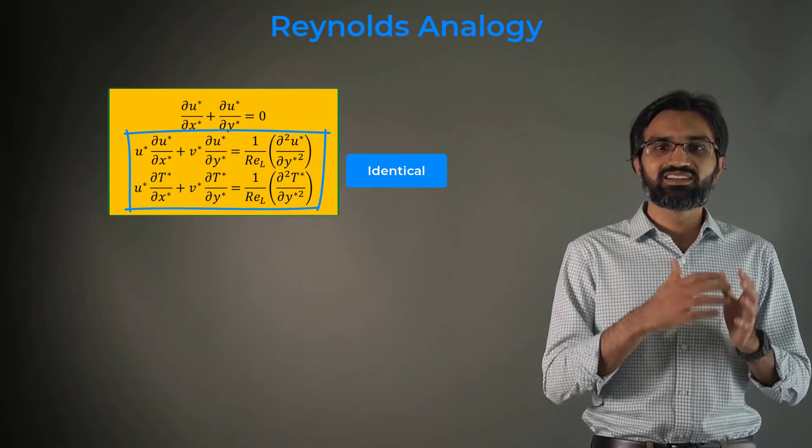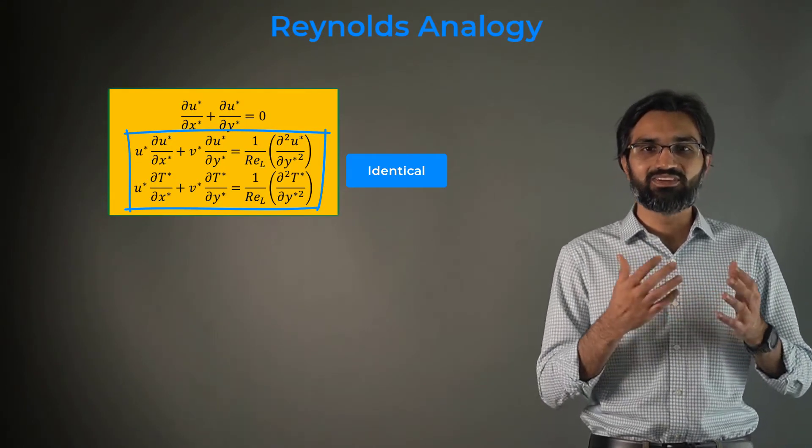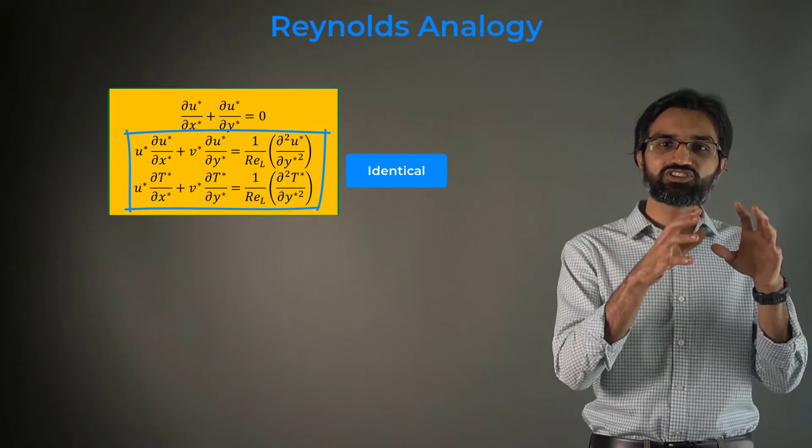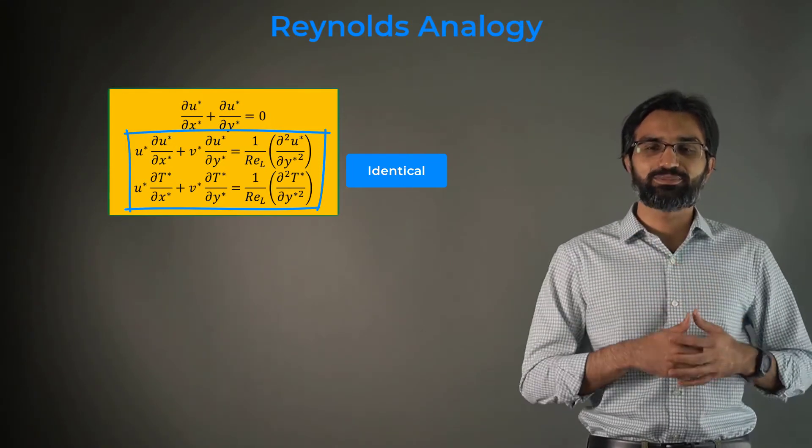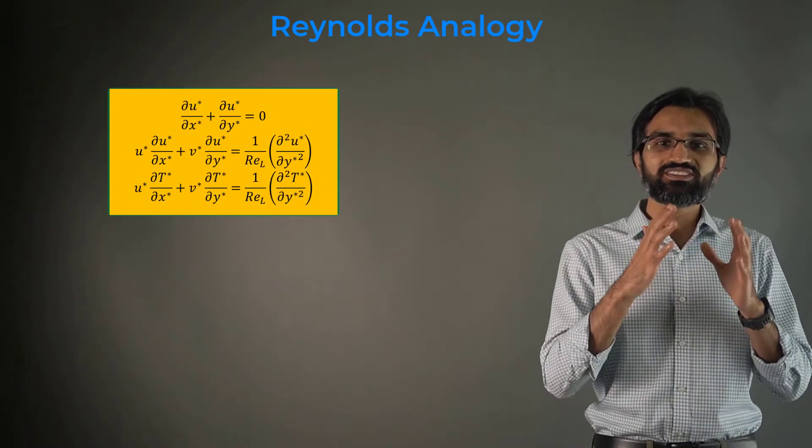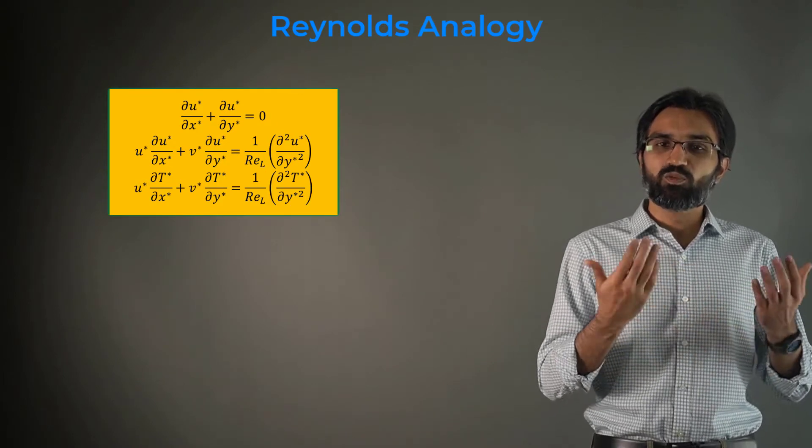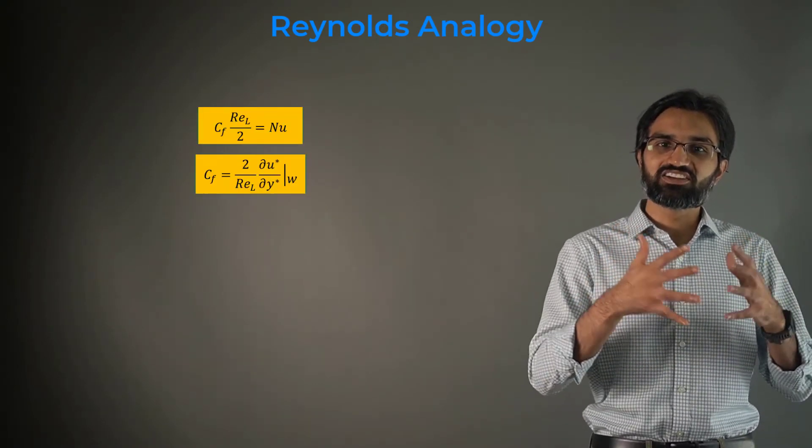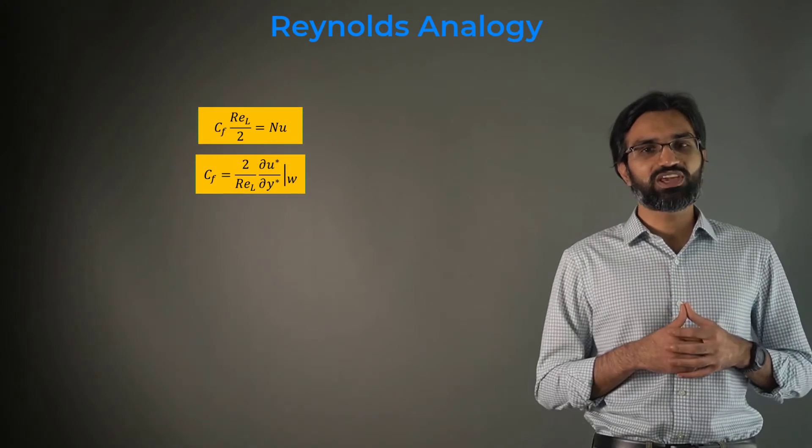This is popularly called the Reynolds analogy where the velocity and temperature profiles have identical shapes. Using this analogy, the wall heat flux and skin friction coefficients are related through the following equation.